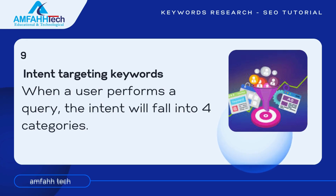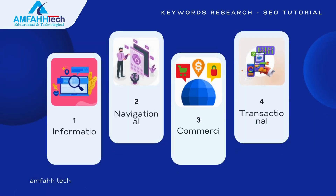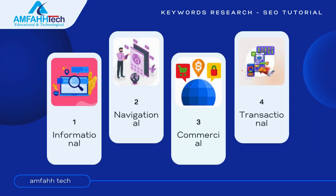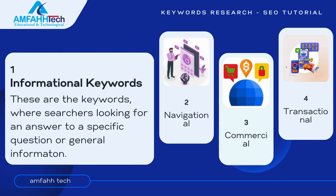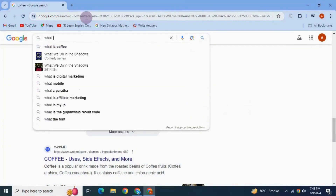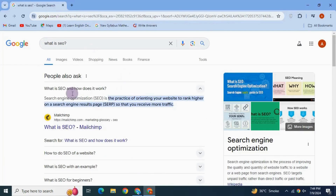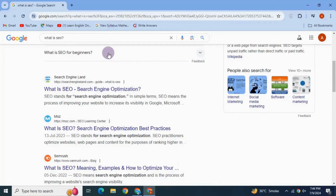The last keyword type is intent targeting keywords. When a user performs a query, the intent falls into four categories: informational keywords, navigational keywords, commercial keywords, and transactional keywords. Informational keywords are those where the searcher is looking for an answer to a specific question or general information — for example, 'what is SEO' or 'how to make coffee.'